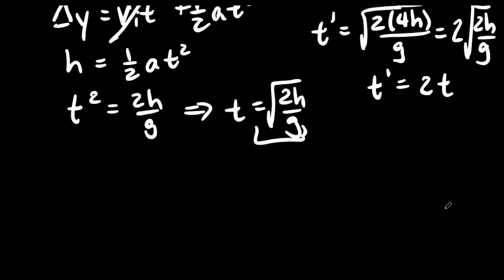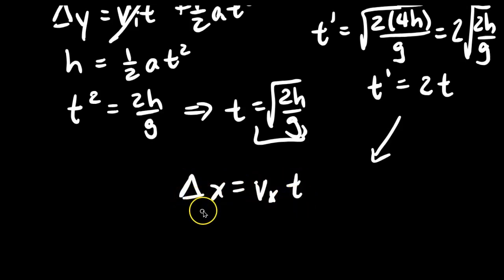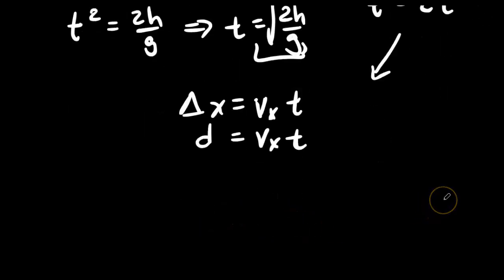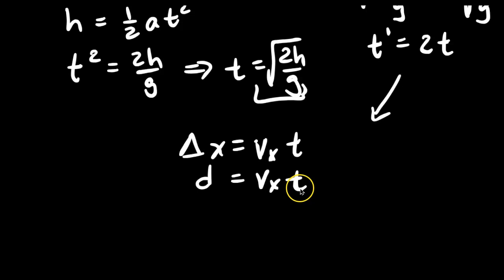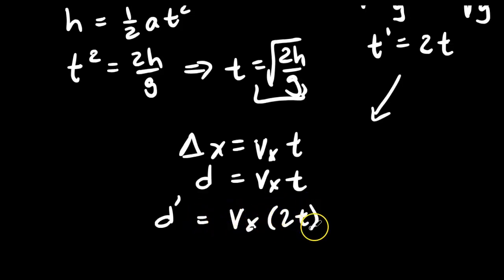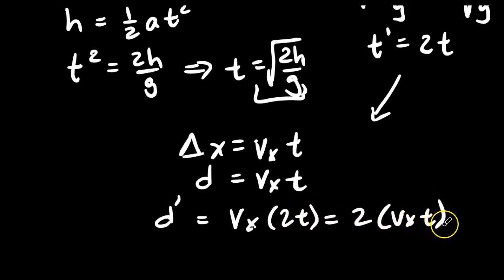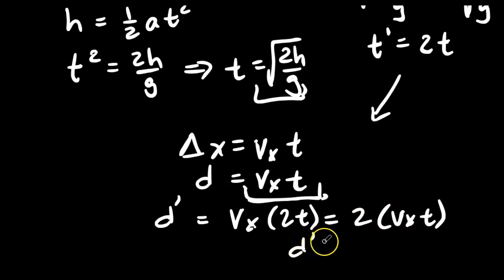Moving to the horizontal motion: delta x equals vx times t, so D equals vx·t. Substituting 2t for the new falling time, the new distance D prime equals vx times 2t. Factoring out the 2 gives 2 times vx·t, and since vx·t equals D, the new distance when we increase the height by 4 times is 2 times the original distance — double the original distance.